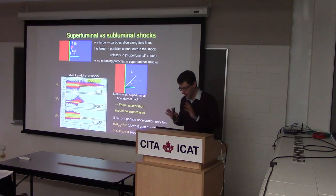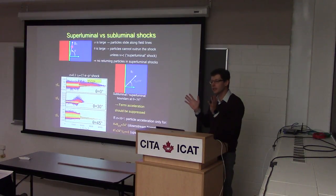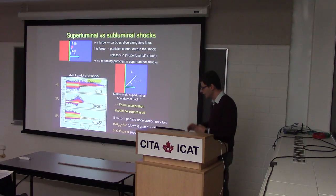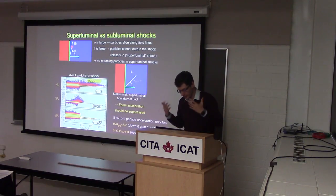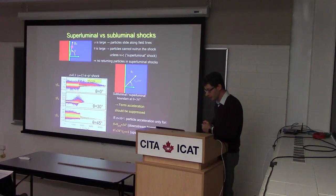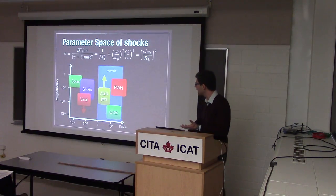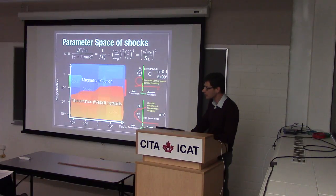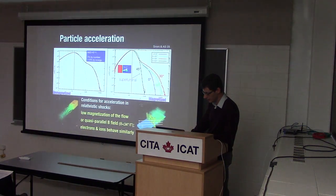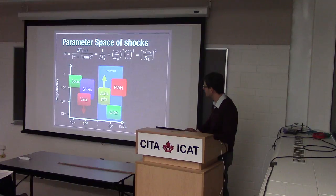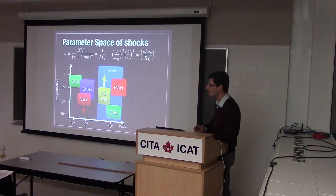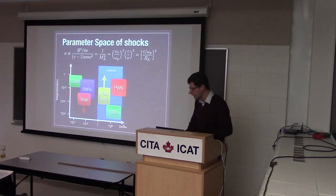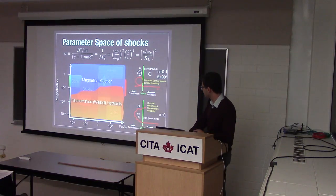So there is a restriction on the magnetic geometries you can tolerate for relativistic shocks if you want to accelerate particles. Magnetization surely has something to do with it too — there must be a limit on magnetization. Yes, I'll come back to those in the next slide.